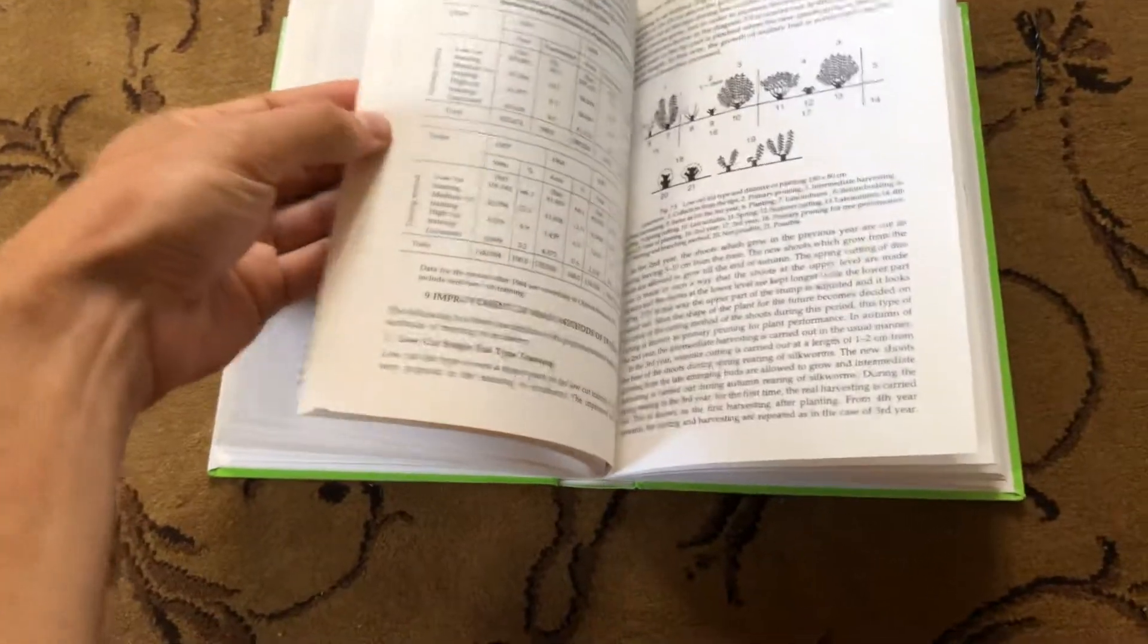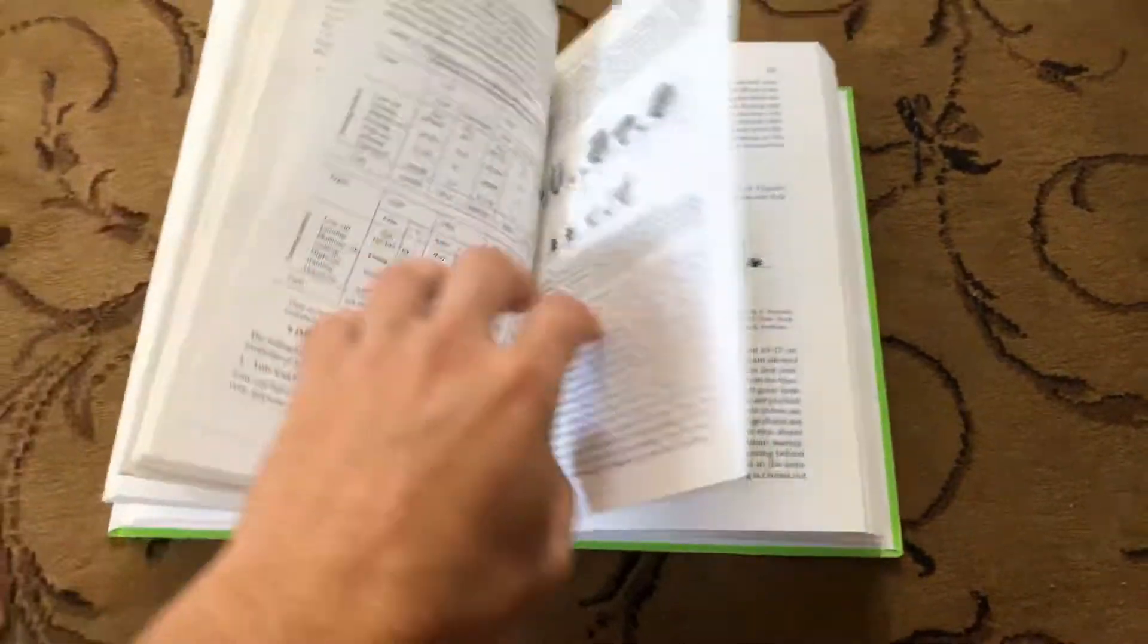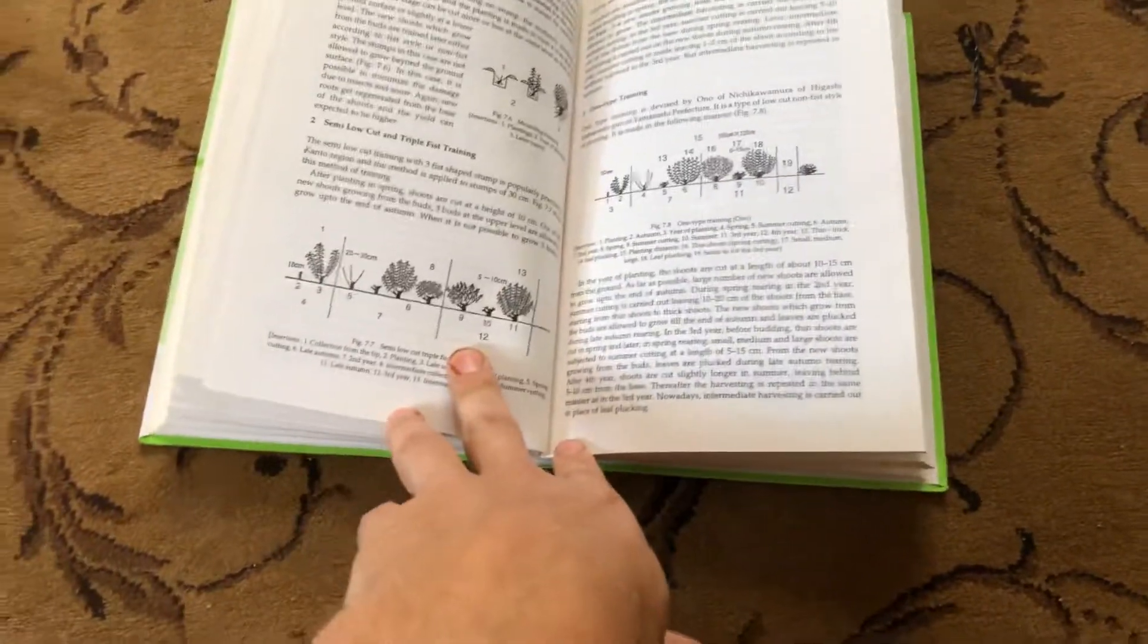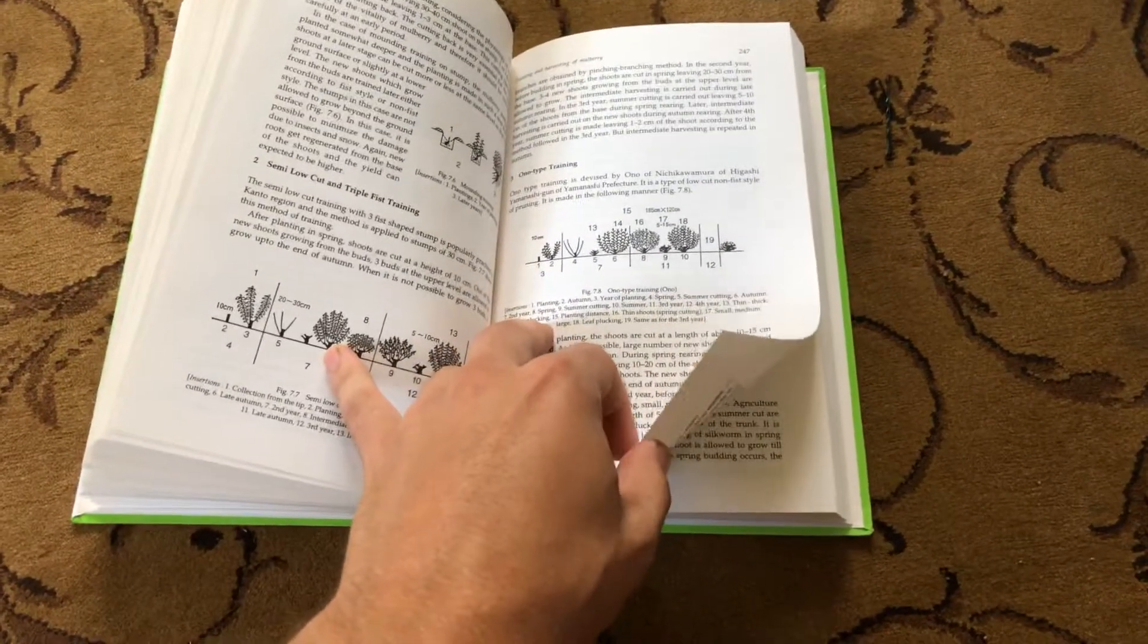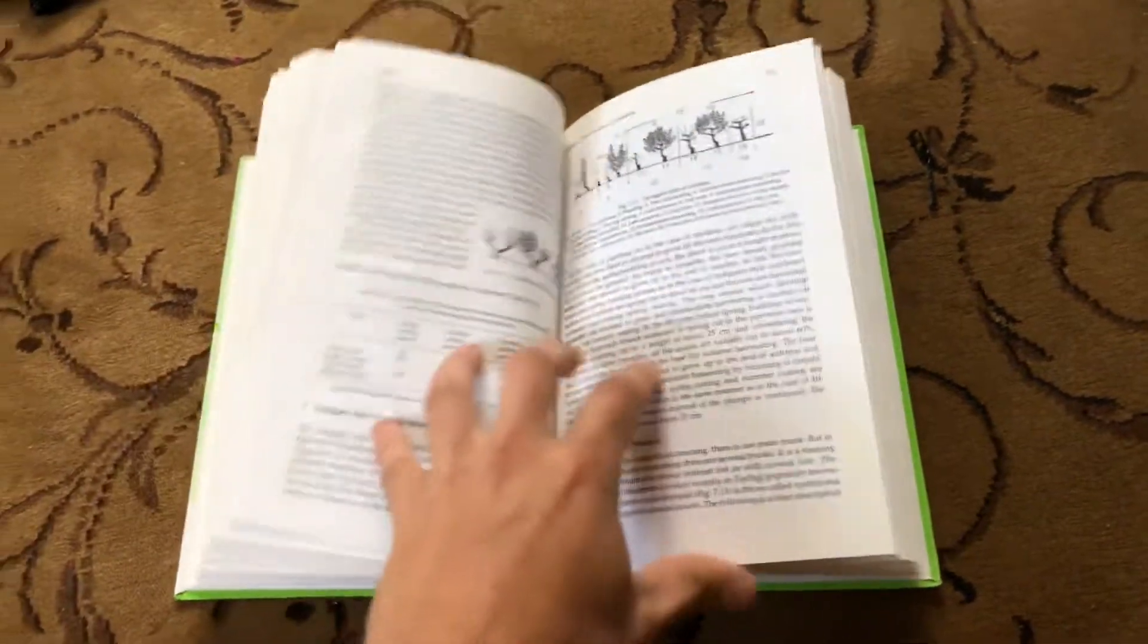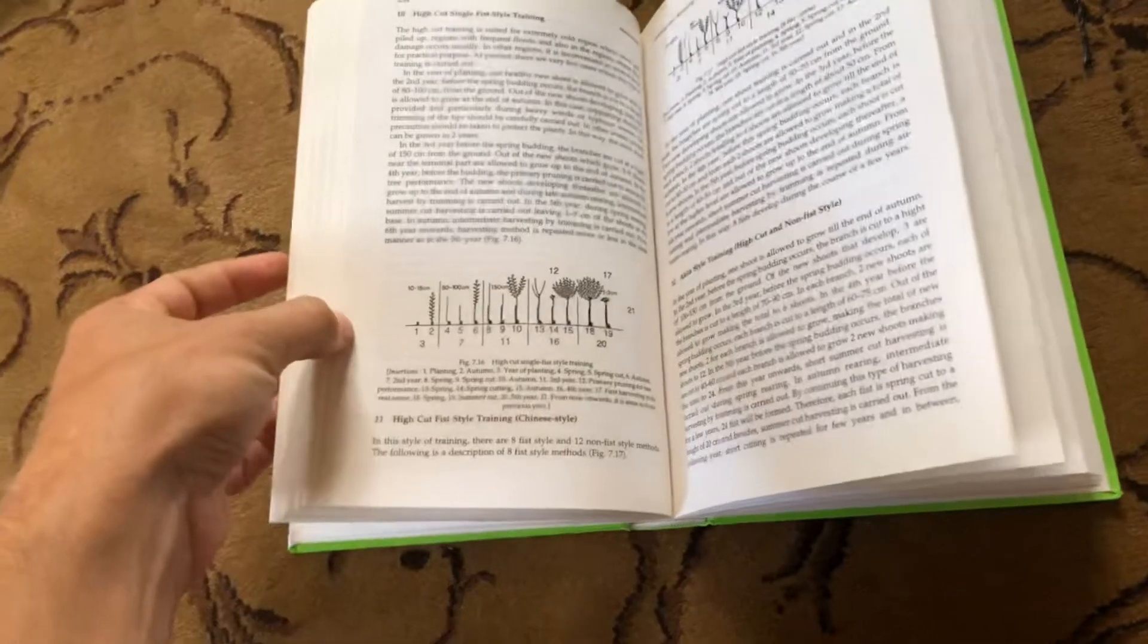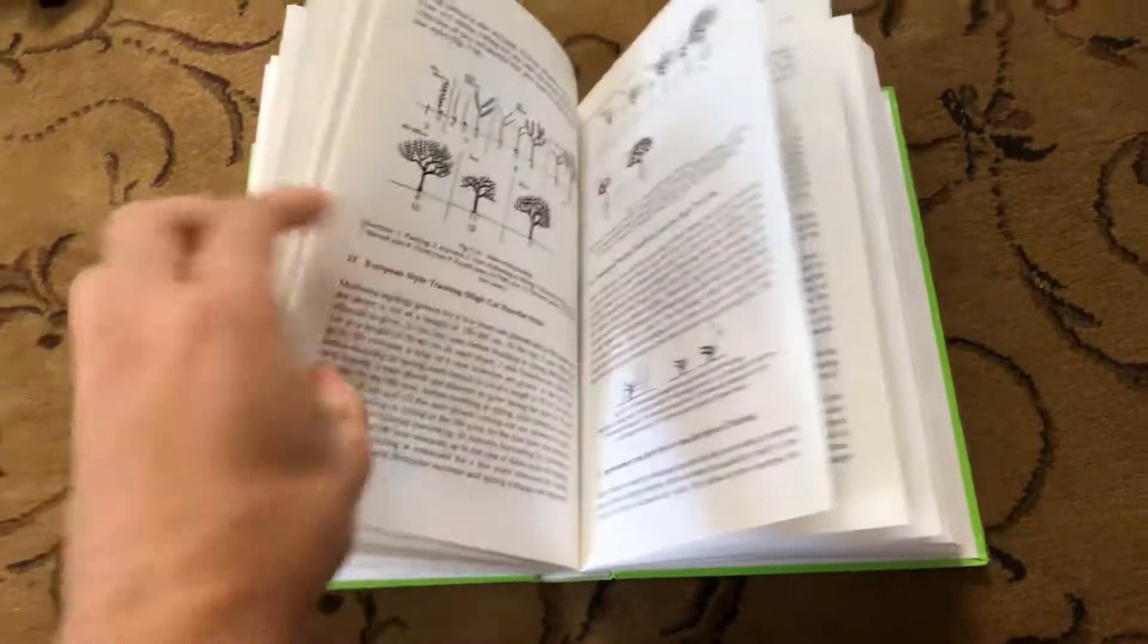Like I said, there's a lot of really dense technical stuff here. But then there are also some really interesting diagrams that show ways to manage trees in a way that improves the way that they grow or makes them easier to harvest from. And so this is mainly done to provide leaves for the silkworm industry. But a lot of these concepts can be extrapolated to other types of trees out there for not just leaf production but maybe other types of production like fruit production or wood production.